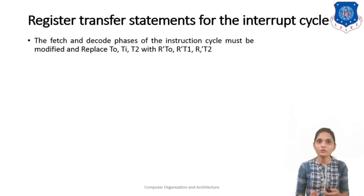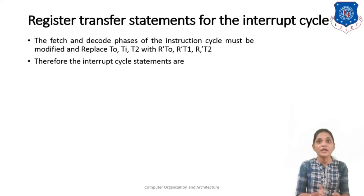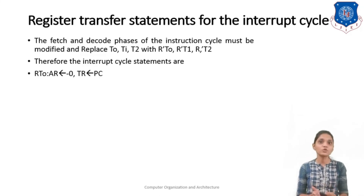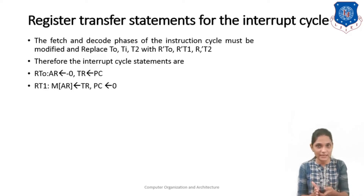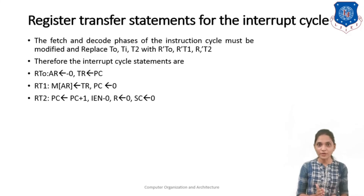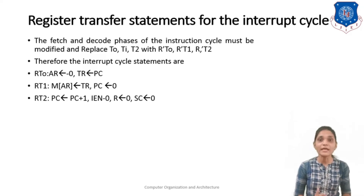Next, the fetch and decode phase must be modified to replace T0, T1, and T2 with R'T0, R'T1, and R'T2 for normal instruction execution. For interrupt execution this will be RT0, RT1, and RT2. The cycle statements can be given as: at RT0 you store 0 into the address register and the program counter into the temporary register. At T1 timing you store the temporary register's content, which is your program counter, into the memory location given by AR, that is location 0, and clear the program counter to 0. Then you increment the program counter by 1, clear IEN to 0, and clear R to 0 so that you can execute the next interrupt.